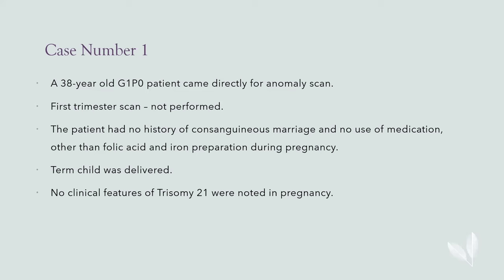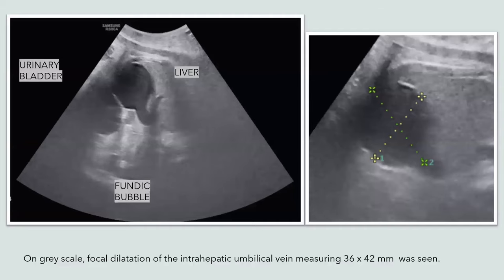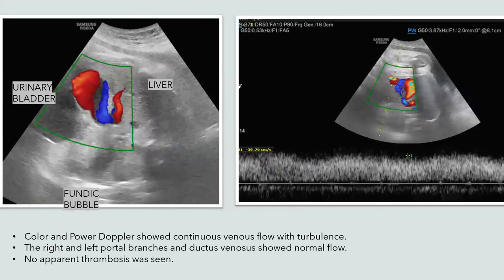A 38-year-old G1P0 patient came directly for a anomaly scan. The first trimester scan was not performed. A term child was delivered. No clinical features of Trisomy 21 were noted in pregnancy. On grayscale, focal dilatation of the intra-hepatic umbilical vein was seen, measuring approximately 36 by 42 mm. Color and power Doppler showed continuous venous flow with turbulence.